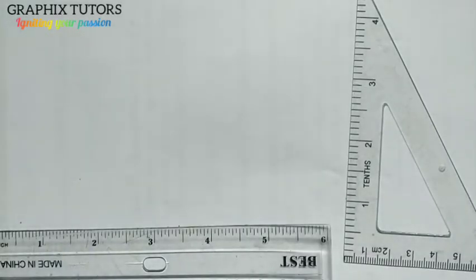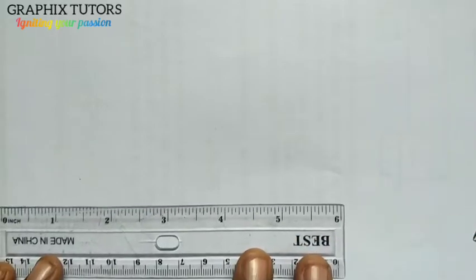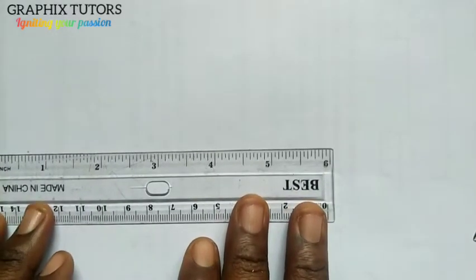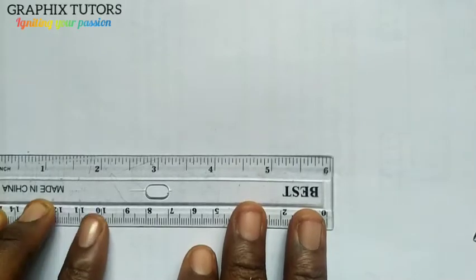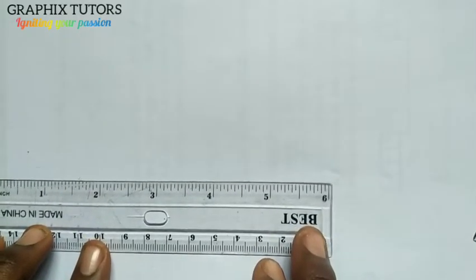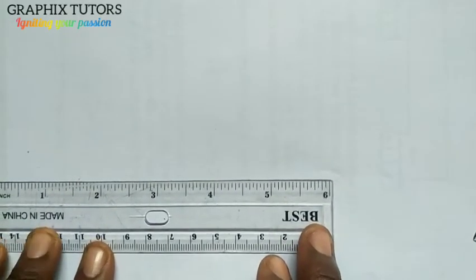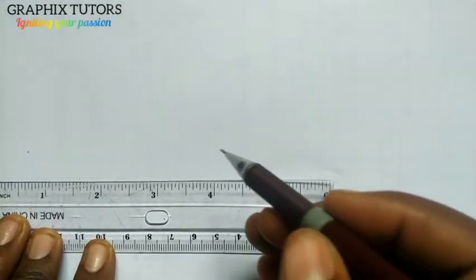Good everyone, my name is Graphics. Today we want to construct angle 67 and a half. When you come across problems like this, the first thing you have to do is to draw your horizontal line. With the help of your t-square, I'll have something like this.